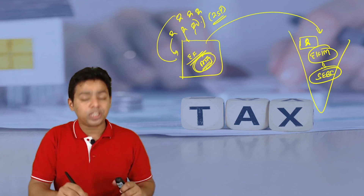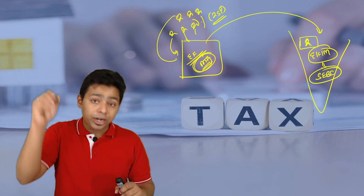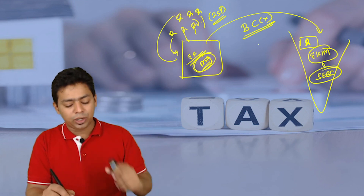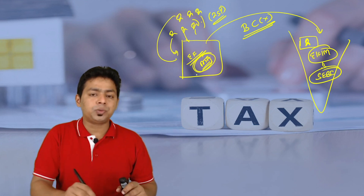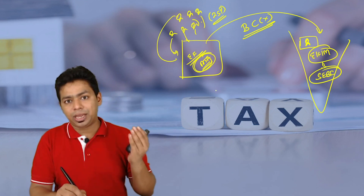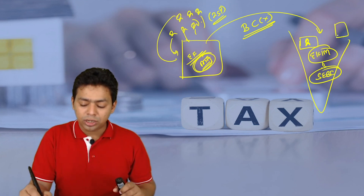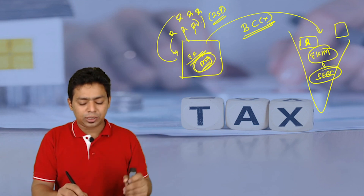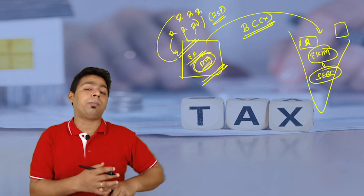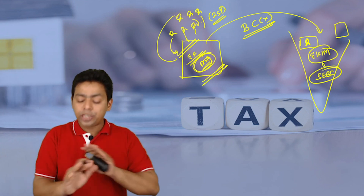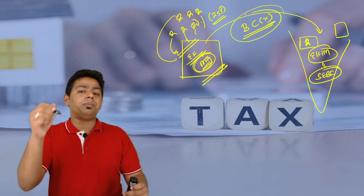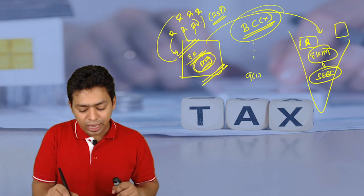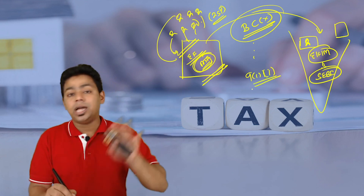Just because a foreign mutual fund is having a fund manager in India, a business connection should not be established. Because if the business connection is established, a lot of income of this foreign mutual fund will become taxable in India, and that is not the intention. Only income earned in the Indian market — capital gain, dividend — only that income should become taxable. They don't want to become a business assessee or comply with filing of return provisions.